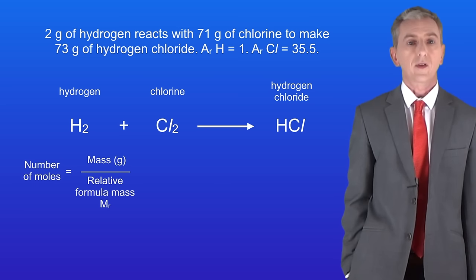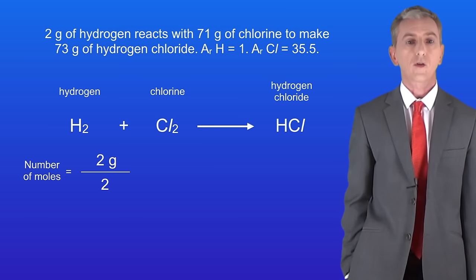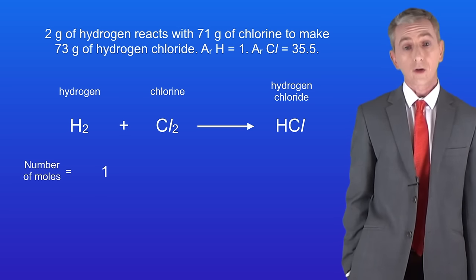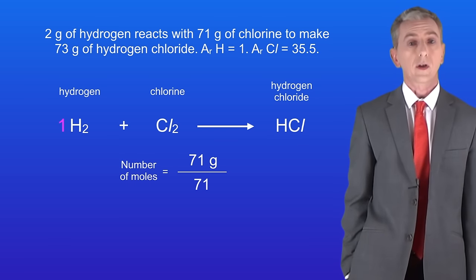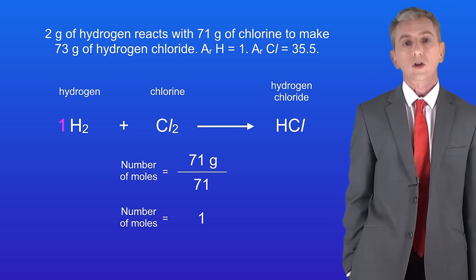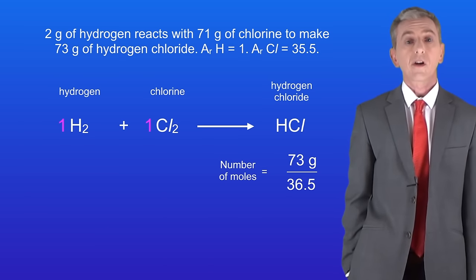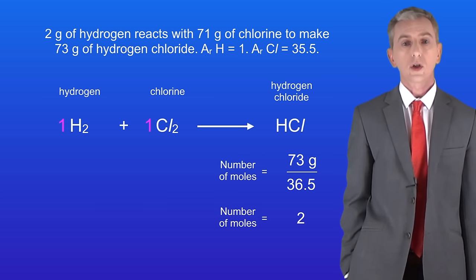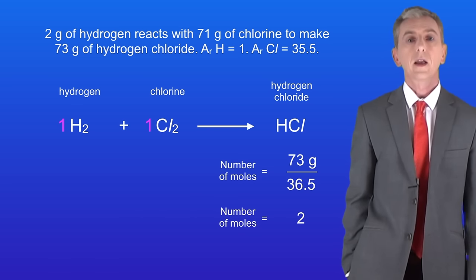Remember that the number of moles is the mass divided by the relative formula mass. We've got 2 grams of hydrogen and hydrogen has a relative formula mass of 2, which means that we've got 1 mole of hydrogen. I'm going to show that by putting a 1 in front of the hydrogen. We've got 71 grams of chlorine and the relative formula mass of chlorine is 71, so we've got 1 mole of chlorine. We've got 73 grams of hydrogen chloride and the relative formula mass is 36.5, so we've got 2 moles of hydrogen chloride. I'm going to show this by putting a 2 in front of the hydrogen chloride.